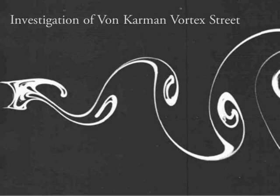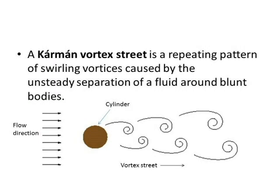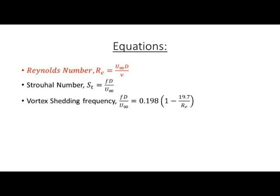The phenomenon you just saw is the famous von Kármán vortex street. In this video, a von Kármán vortex street is generated in a laboratory using a wind tunnel. A von Kármán vortex street is a repeating pattern of swirling vortices caused by the asymmetric separation of a fluid around blunt bodies.